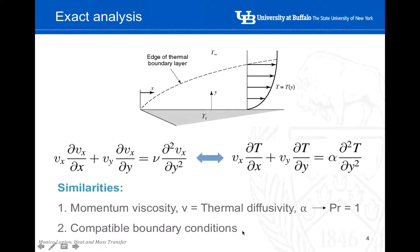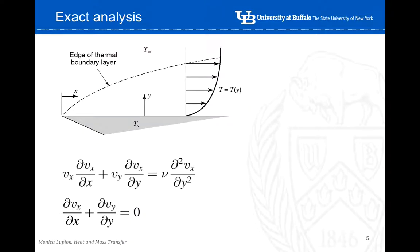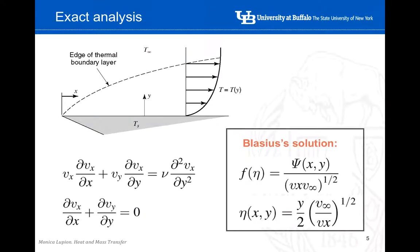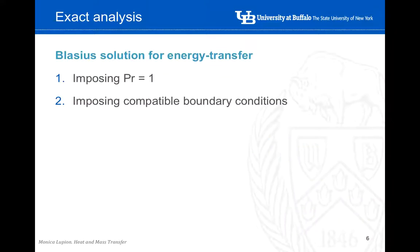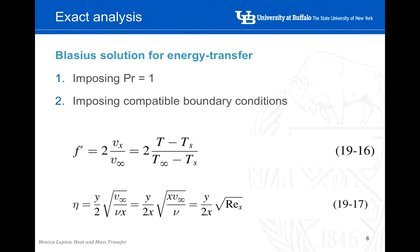The second condition is that whatever boundary conditions we were using in the momentum transfer solution, we need to find similar or compatible boundary conditions for the heat transfer problem. From the study of momentum transfer we defined the solution proposed by Blasius. There are two different functions f and eta, and that would be the solution of this equation. To use this solution for heat transfer, we need to impose the Prandtl number equal to one and compatible boundary conditions.